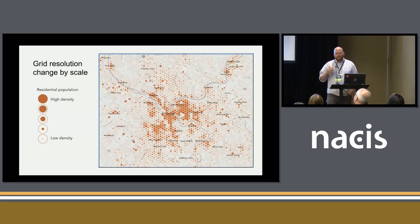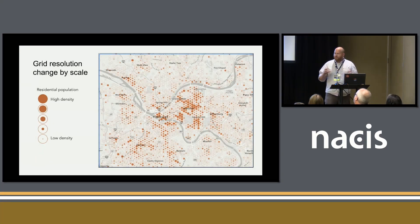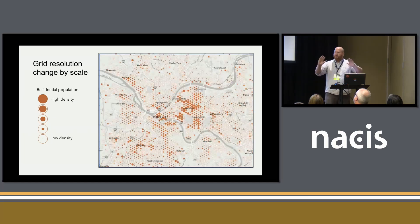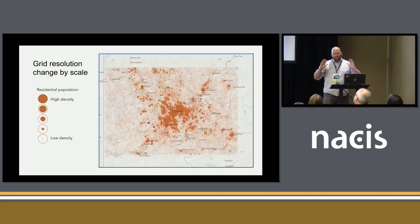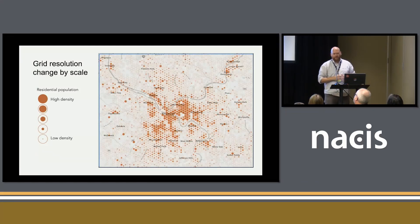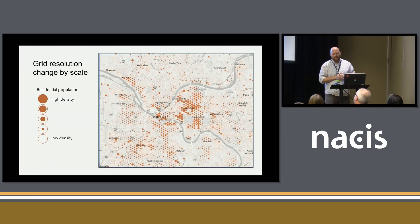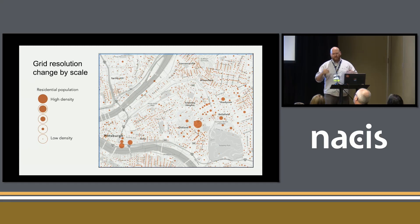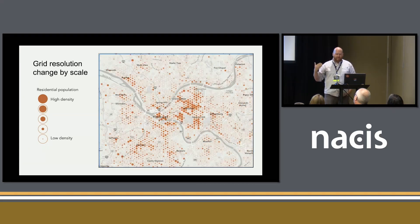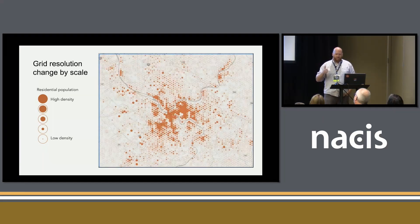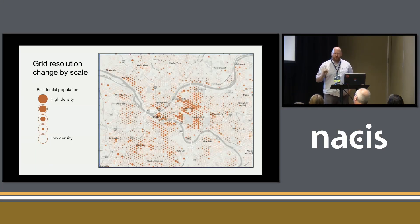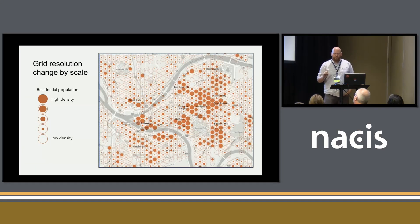You could do something a little different by changing the actual resolution of your bins as well. At the most zoomed-out scale I'm looking at one-mile cells, then quarter-mile cells as you zoom in, and when the aggregation no longer makes sense, I can show the population at the block group level.